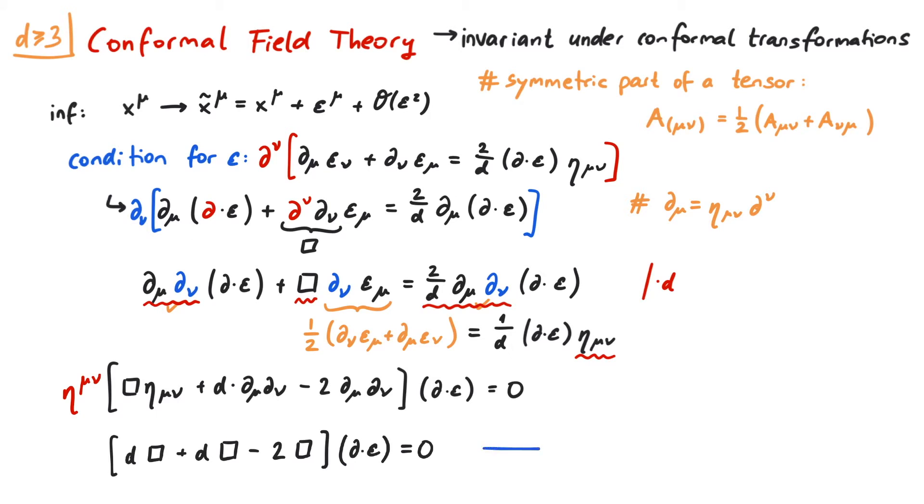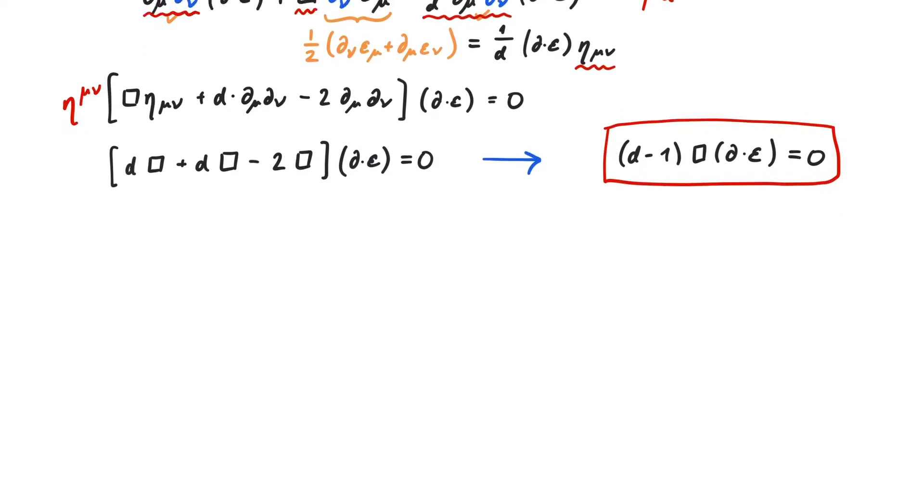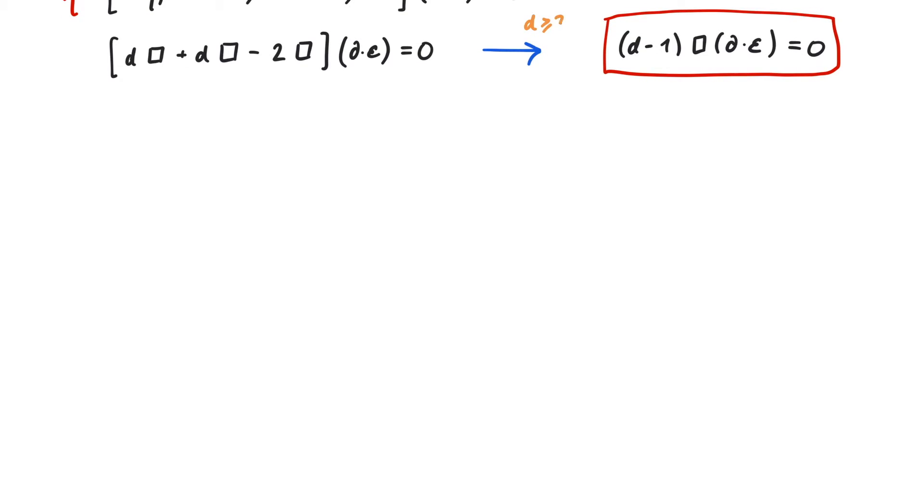Dividing by 2 gives us an interesting equation: (d-1) times the box operator acting on the divergence of epsilon is 0. In this video, we will focus on d greater than or equal to 3 dimensions. Our new equation tells us that, in this case, the divergence of epsilon is linear in x.